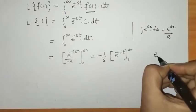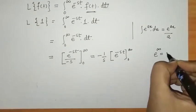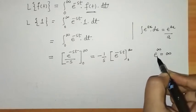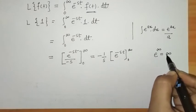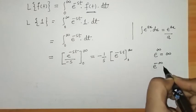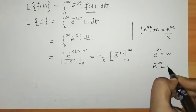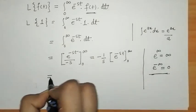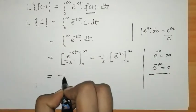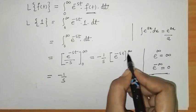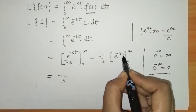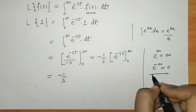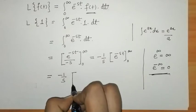We know that e raised to infinity is infinity since e is a positive constant, and e raised to minus infinity equals 0. When we put t equals infinity, we have e raised to minus infinity, which is 0, provided s is greater than 0.